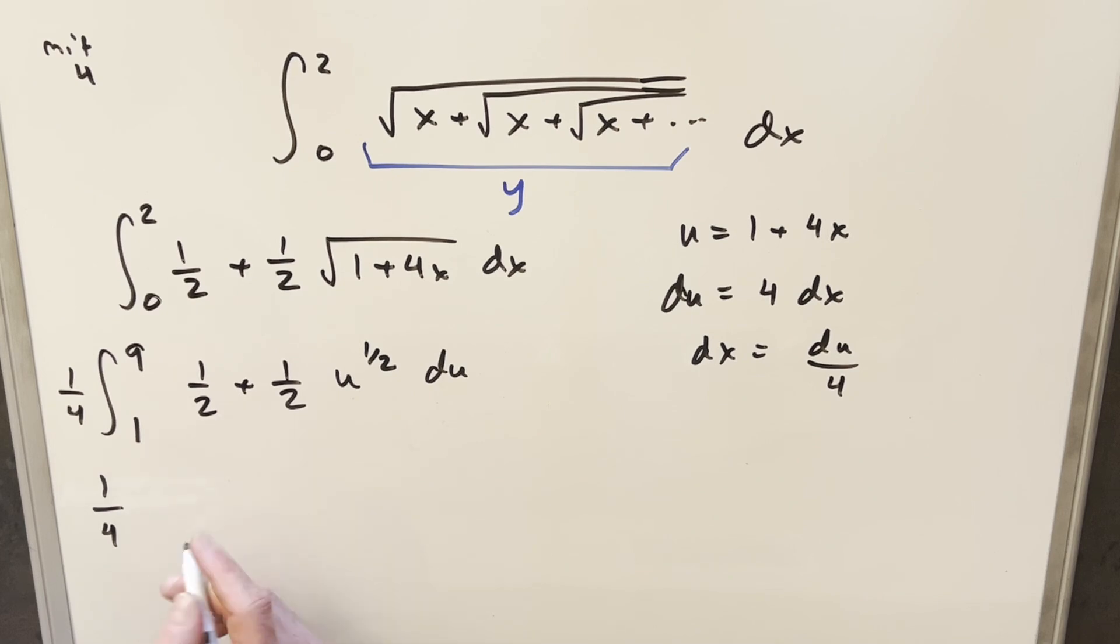Integrating: the integral of 1 half gives 1 half u. For the second term, we have 1 half times u to the 3 halves with reciprocal 2 thirds. We evaluate this from 1 to 9. Let's cancel the 2s, so this becomes 1 third. I'll keep the 1 fourth outside the whole expression.